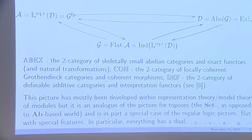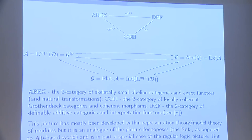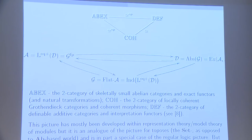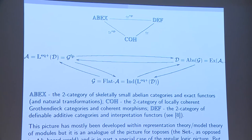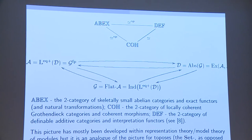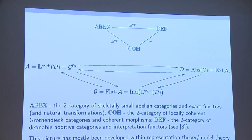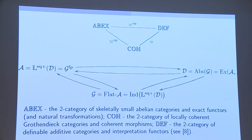These are all additive categories of some sort or another. In the top diagram, these are three 2-categories. The first one is a category of small or skeletally small abelian categories with exact functors as the 1-arrows, and natural transformations are always the 2-arrows.